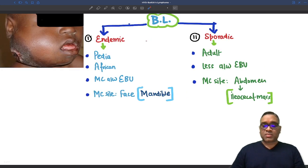If you look into Burkitt lymphoma, we can broadly divide them into two: endemic and sporadic. Endemic is usually seen in pediatric African babies. As you can see, this is a pediatric African baby.